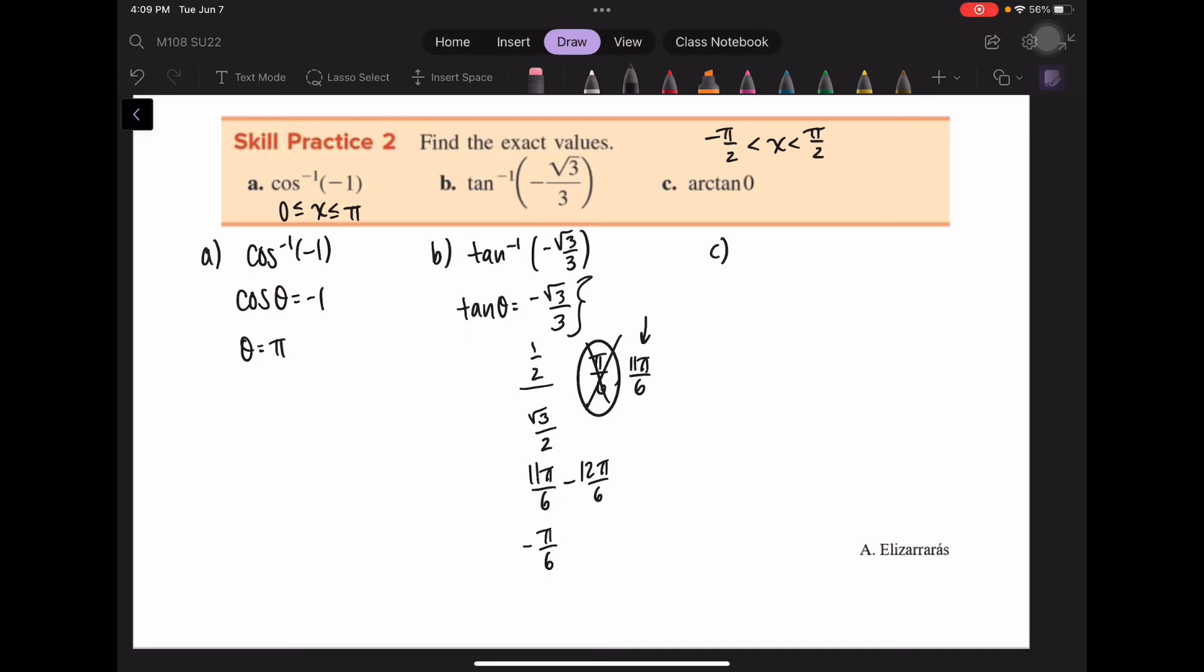Part C, the arc tangent equaling zero is saying tangent of theta is equal to zero for some value. When is tangent of theta equal to zero? On the unit circle, y is zero on the x-axis at the point zero one and zero negative one, but remember we're on the interval from negative pi over two to positive pi over two, so we're in quadrants one and four. So it's going to be this point right here, which is at either zero or two pi, but to stay in our interval, that's got to be zero. So that's going to be when theta equals zero.